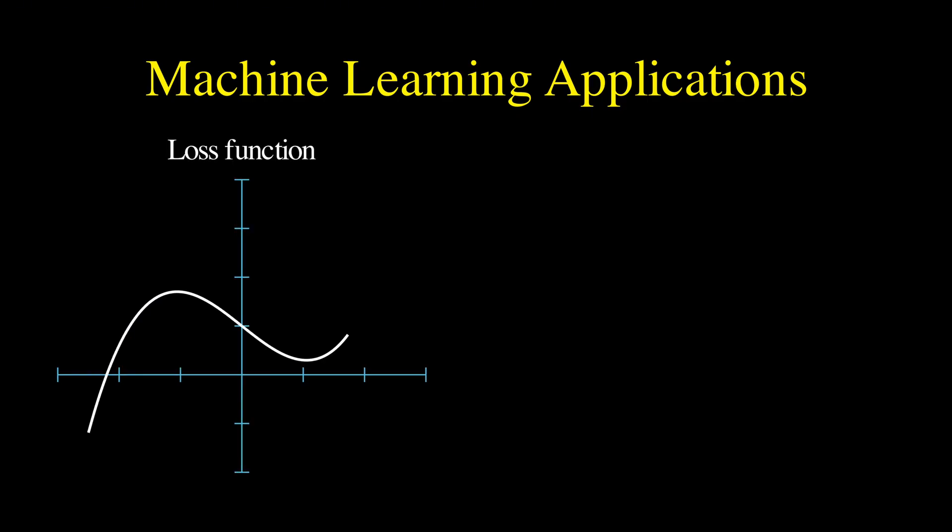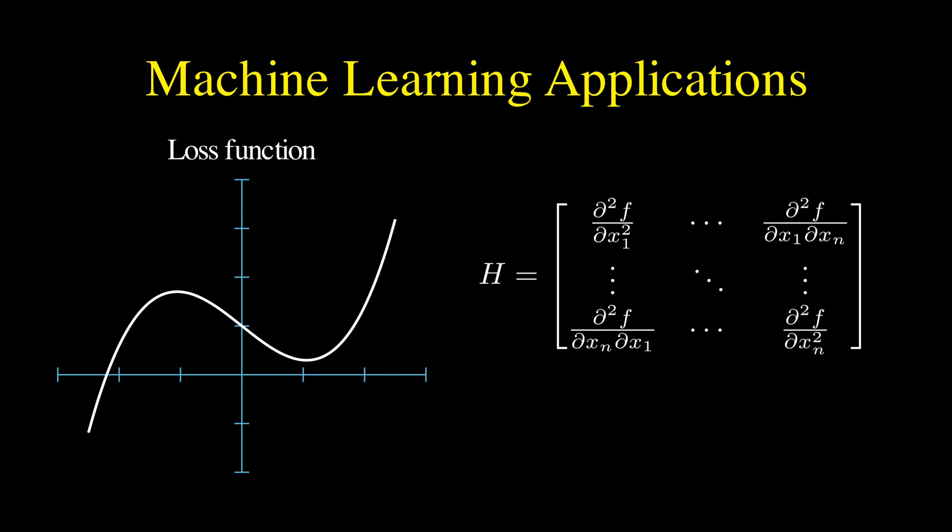Now, let me talk about why this is actually super relevant in machine learning. In machine learning, when we are training neural networks, we are trying to minimize a loss function that typically depends on thousands or millions of parameters. So, it's a very high-dimensional function, and the Hessian matrix would give us information about the curvature of this loss function in all directions,